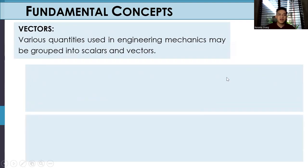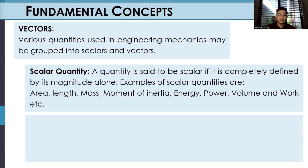Vectors. Various quantities used in engineering mechanics may be grouped into scalars and vectors. Scalar quantity is said to be scalar if it is completely defined by its magnitude alone. Examples of scalar quantities are area, length, mass, moment of inertia, energy, power, volume, and work.